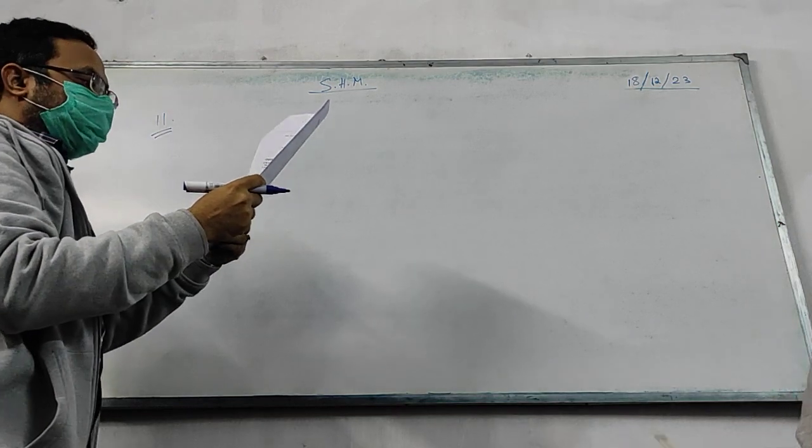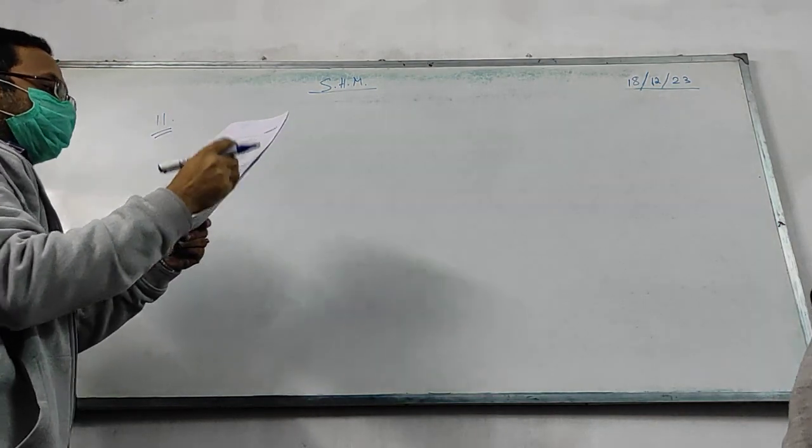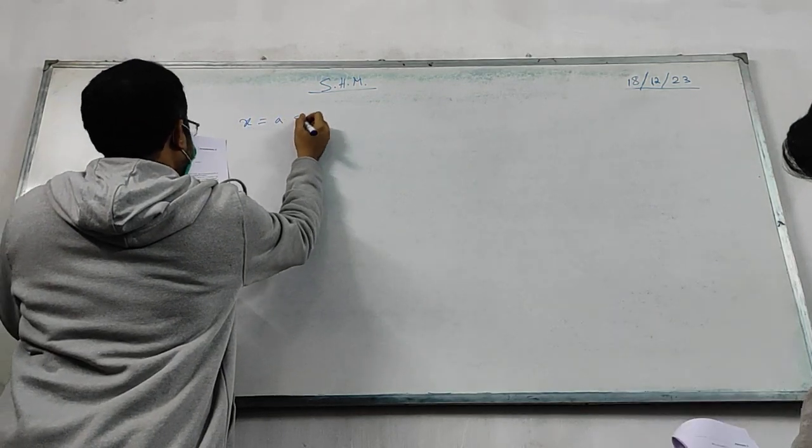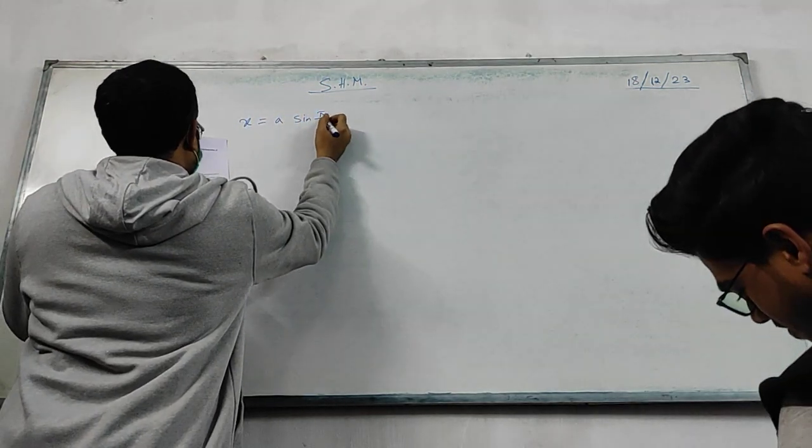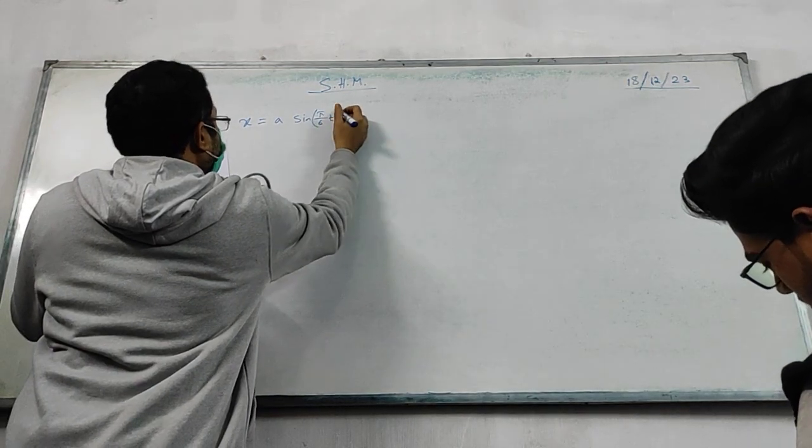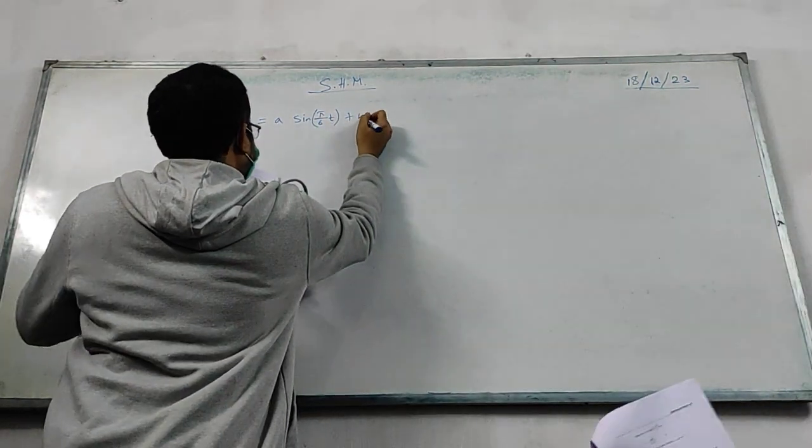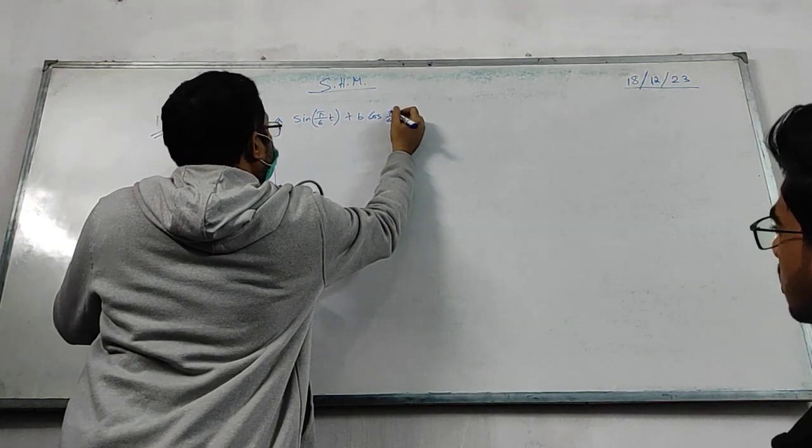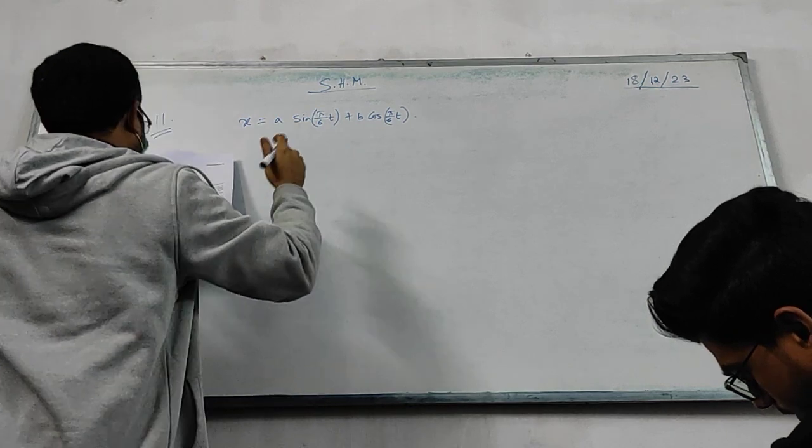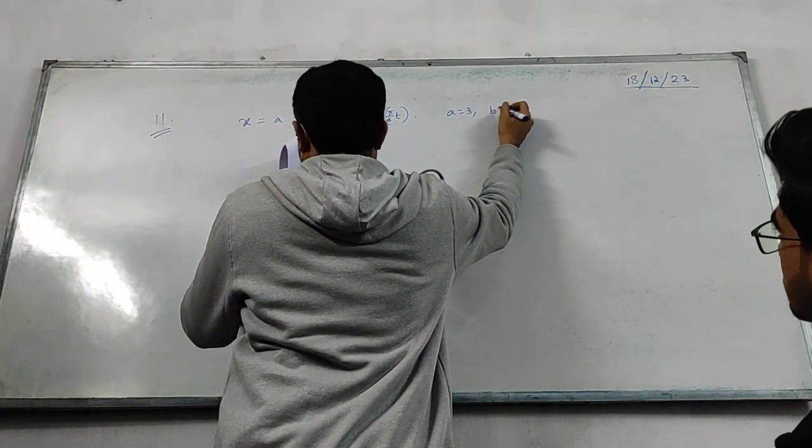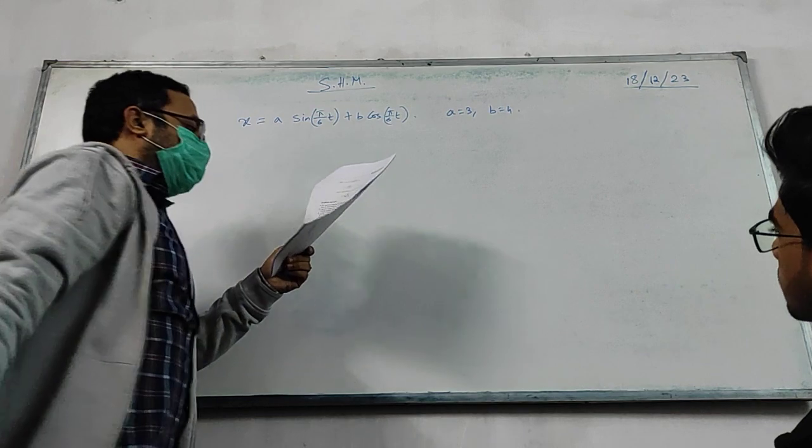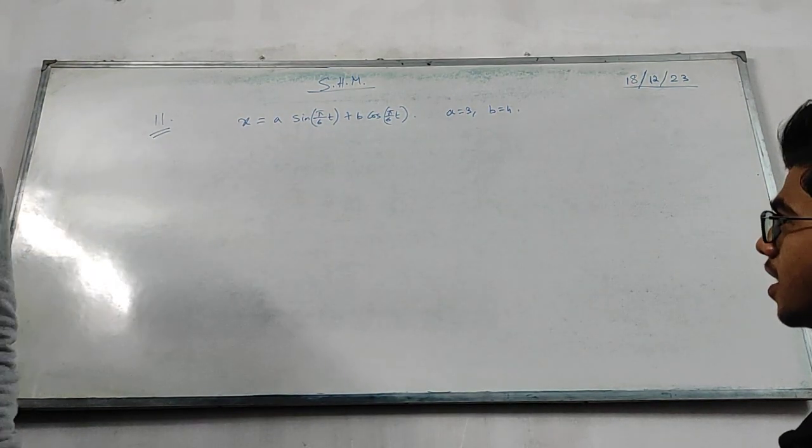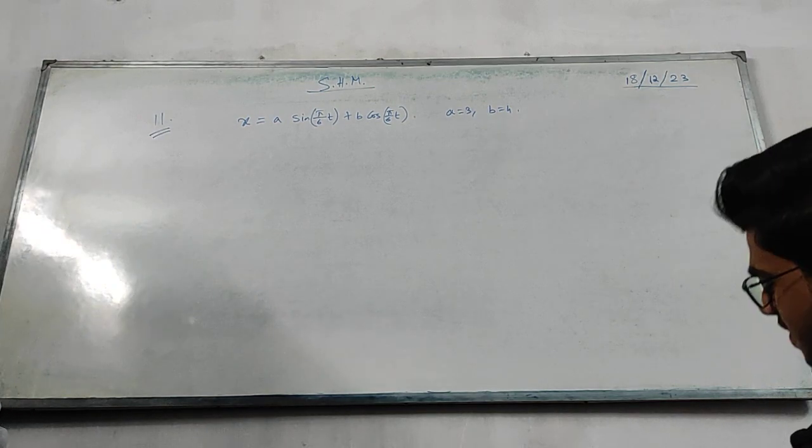It's given that the displacement of a particle executing simple harmonic motion at any instant time is given by x equal to a sin pi by 6t plus b cos pi by 6t. Where a is 3 and b is 4, it is given. They want you to find out amplitude, initial phase, displacement, velocity, blah blah blah. Now the question is, how do you go for it? How do you do it now?